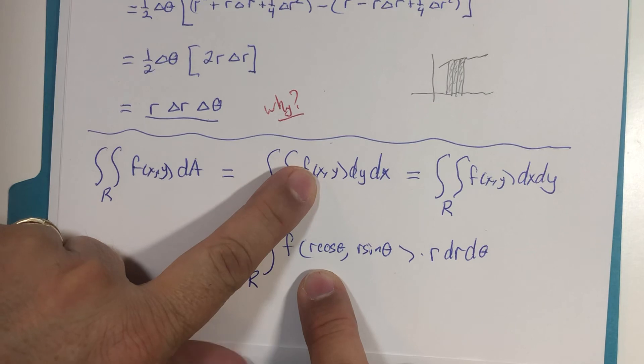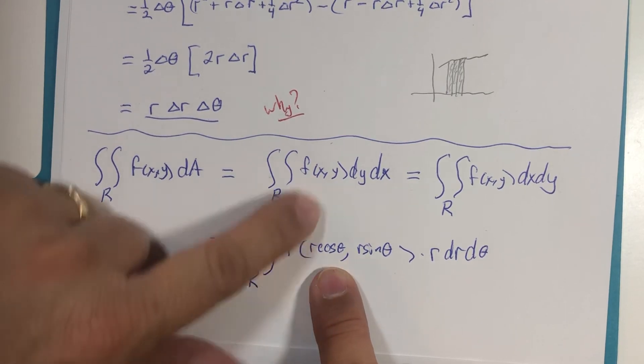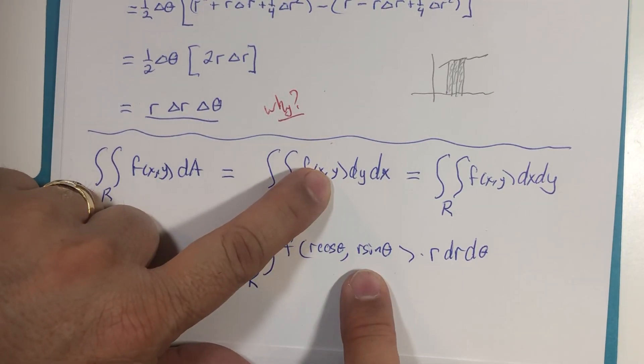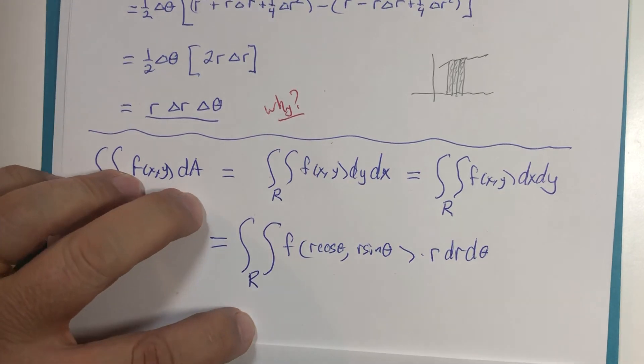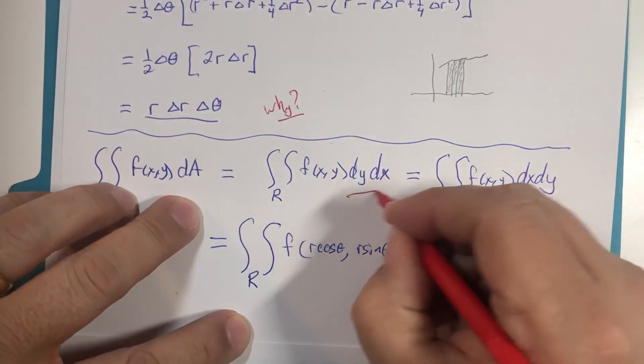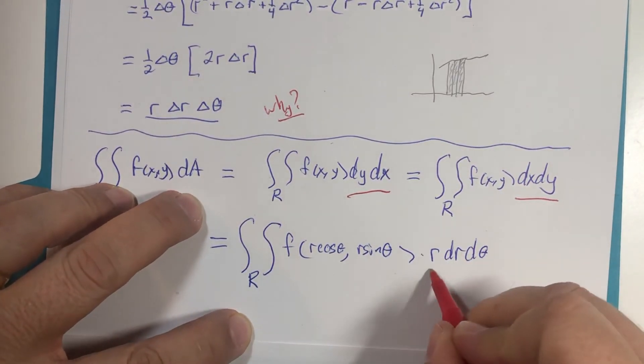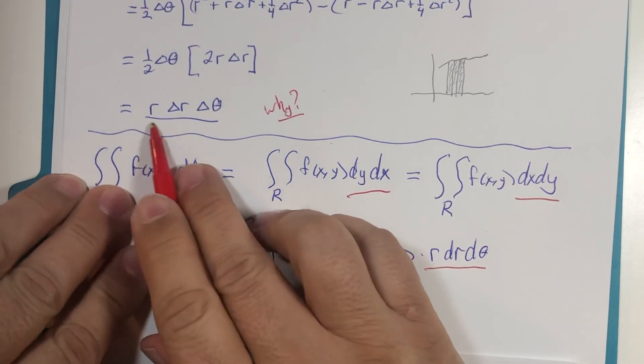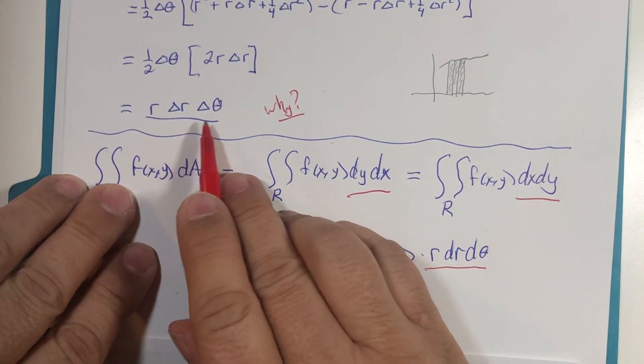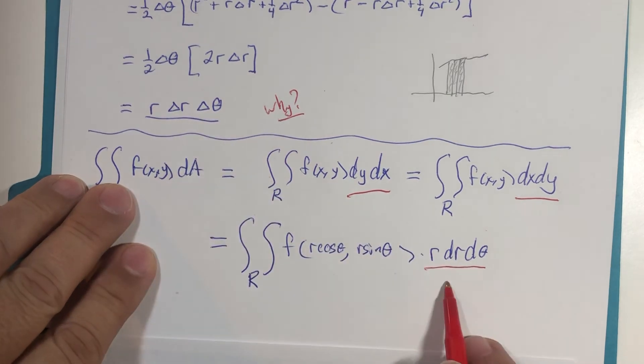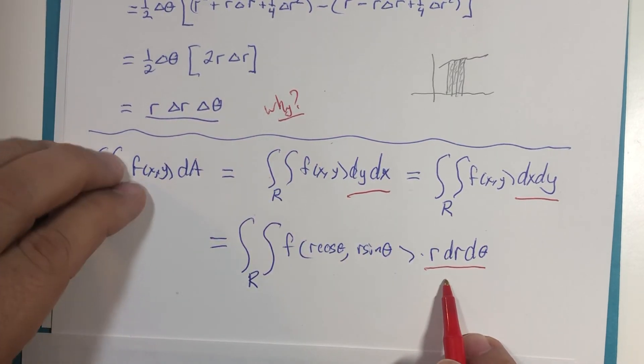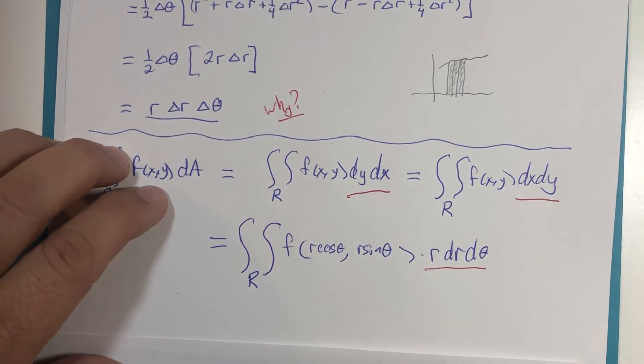If we write this in polar coordinates, the x in the function gets replaced with r multiplied by cos θ and the y is r sin θ, but our dy dx or the dx dy will become this: r times dr times dθ. We write it in our integral. Well, geometric derivation—hope you enjoyed it.